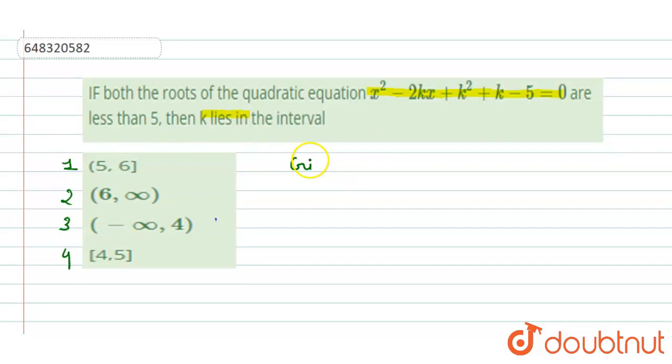So what we will write: the given quadratic equation is x squared minus 2kx plus k squared plus k minus 5 equals 0. So here a equals 1, b equals minus 2k, and c equals k squared plus k minus 5.